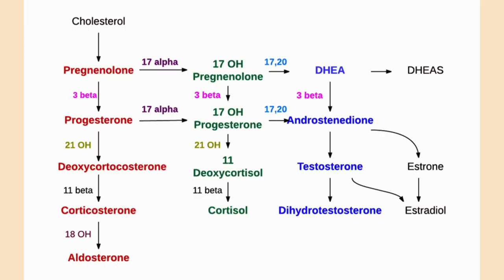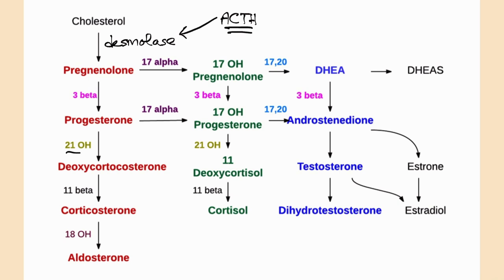This is the steroid synthesis pathway, where all our steroid hormones come from. A very important step is the first step going from cholesterol to pregnenolone. There's an enzyme called desmolase, which is partially under the control of ACTH — that's kind of where ACTH fits into this picture. You probably recognize some of these other enzymes, particularly 21-alpha-hydroxylase, which comes into play with congenital adrenal hyperplasias.